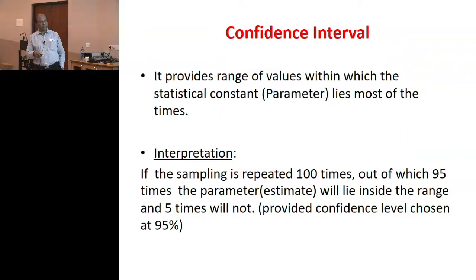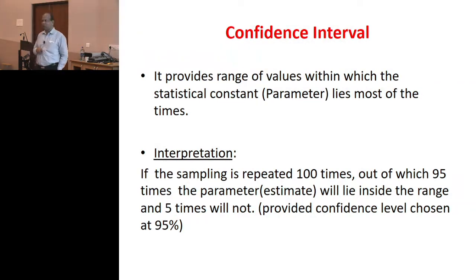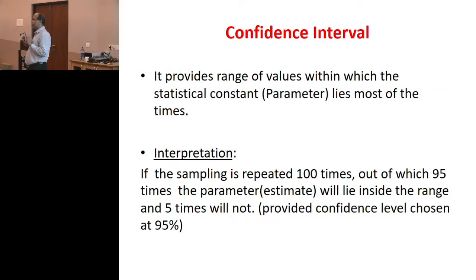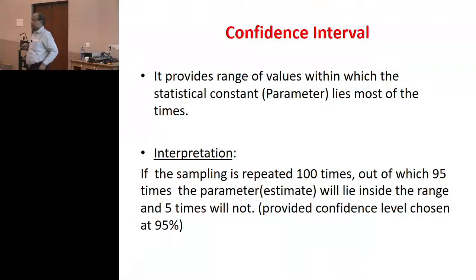If I repeat this many hundred times, 95% of the time the sensitivity parameter will lie inside the range, and five times it will not. So when I say 80% sensitivity with plus or minus 5%, it means 95% of the time whatever I estimate will fall between 75 to 85. That is what it means.